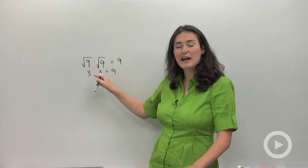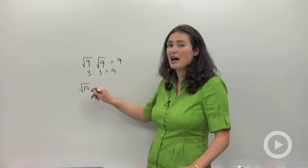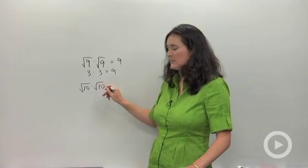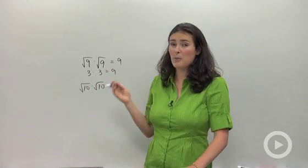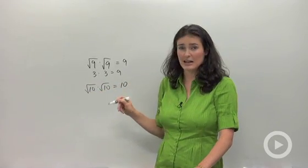Check it out—that was your radicand all along. Same idea with things that have non-integer square roots, like square root of 10. Square root of 10 is some nasty decimal, I don't know what it is, but I do know that square root of 10 times square root of 10 equals regular old 10.